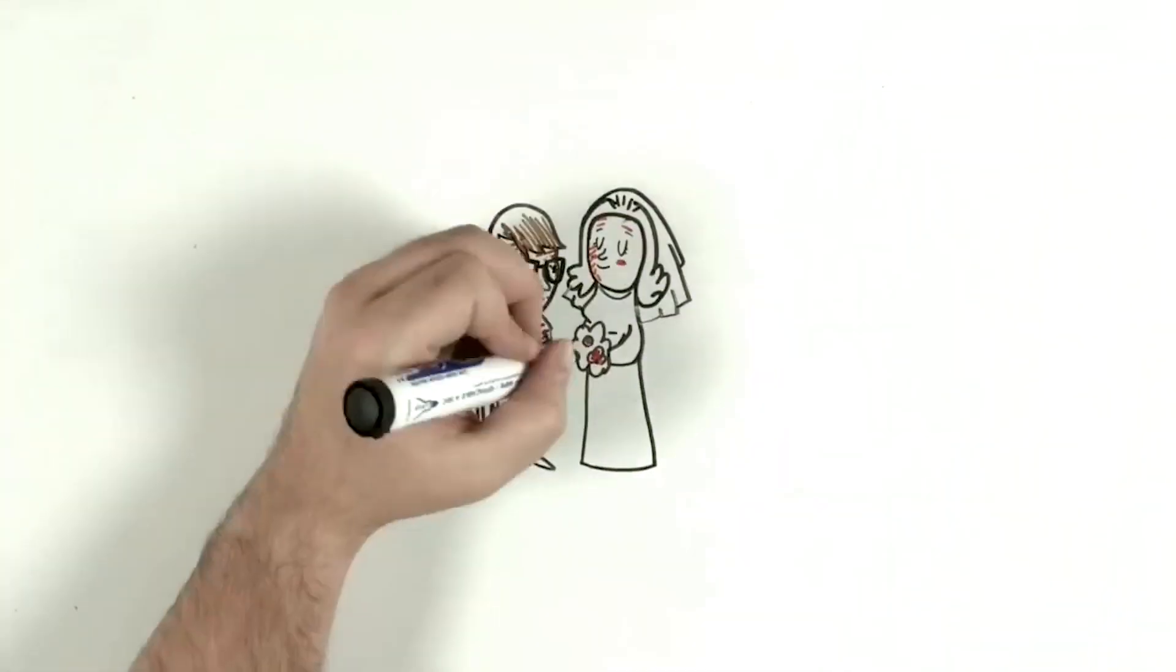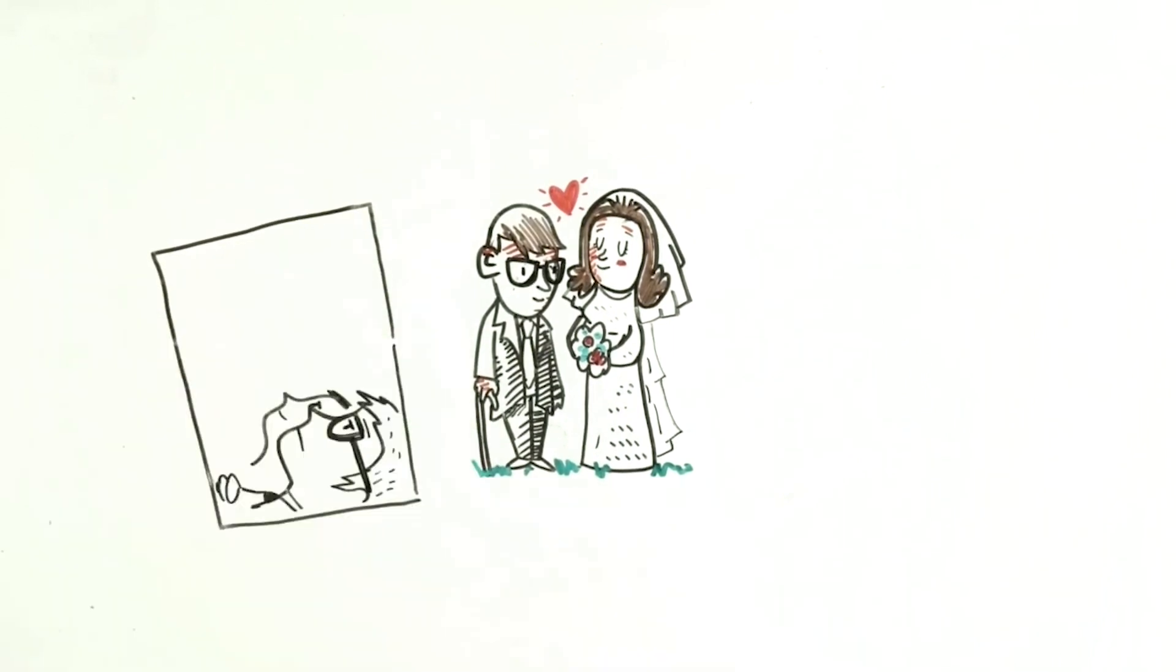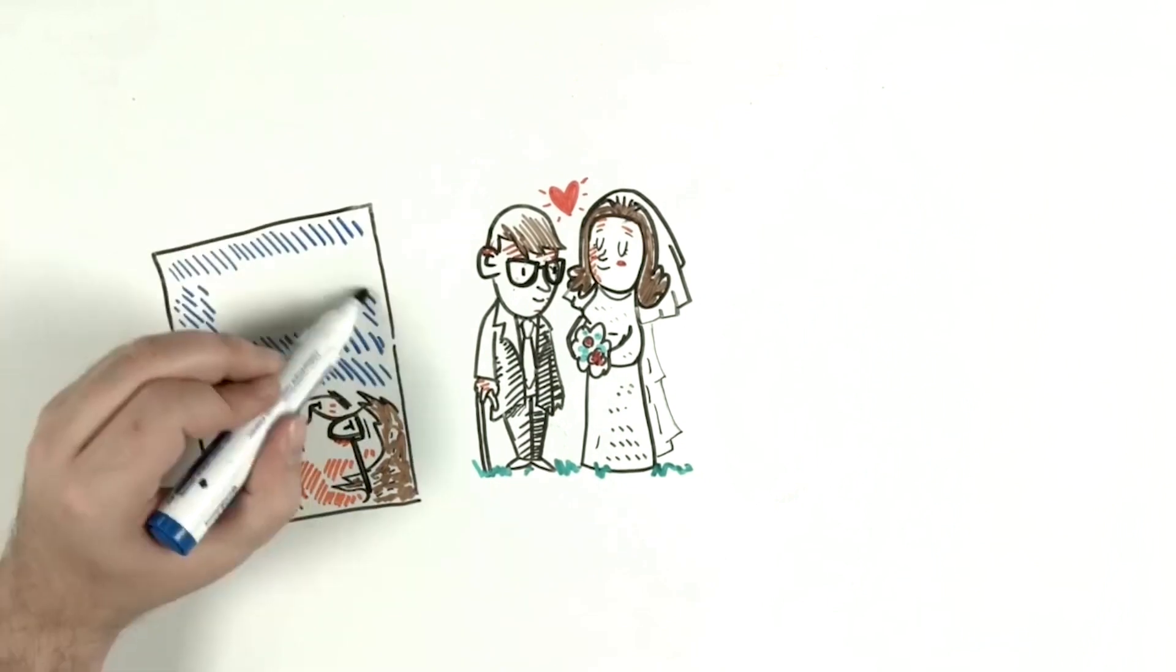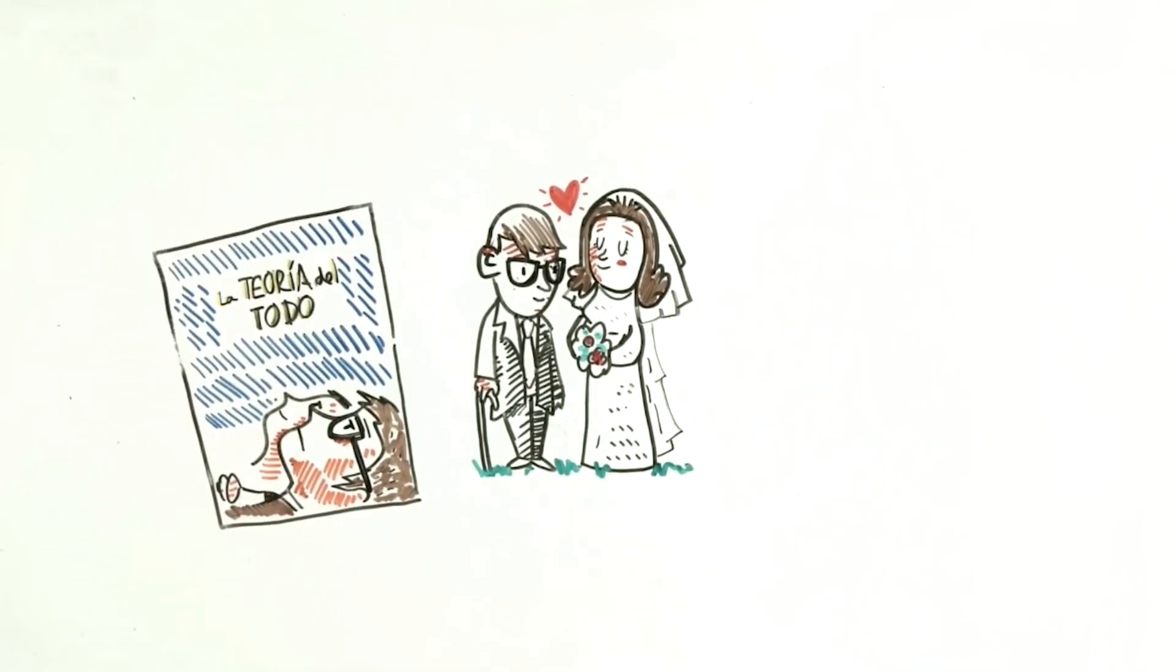Practically at the same time he was diagnosed with ALS, he met the love of his life, Jane Wilde, who remained by his side for 25 years. They got married in 1965. The film, The Theory of Everything, tells the story of this difficult relationship from Jane's point of view, which was completely marked by the disease.